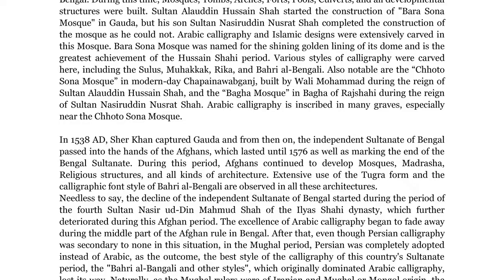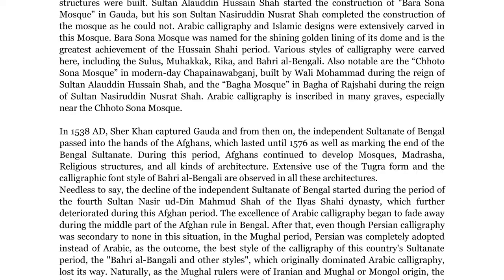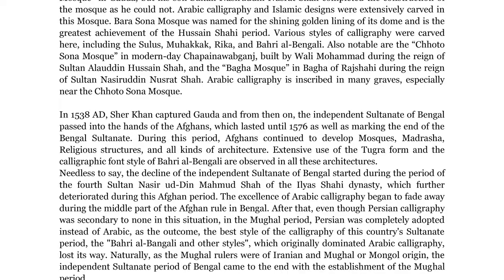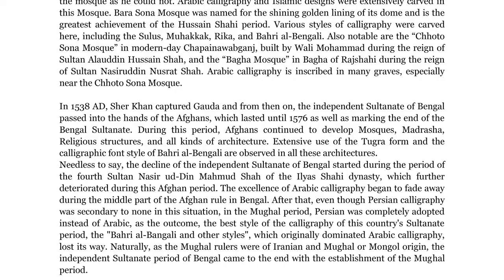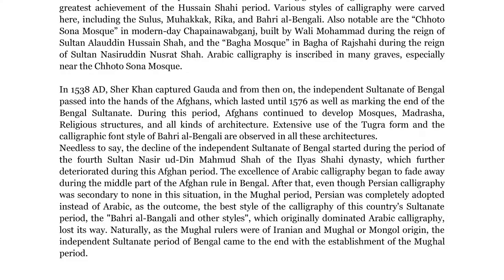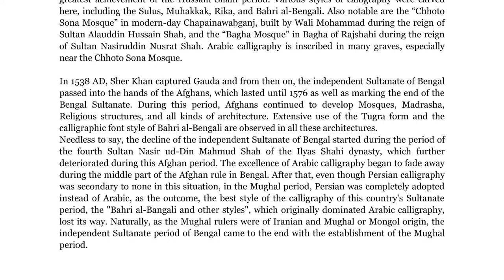The excellence of Arabic calligraphy began to fade away during the middle part of the Afghan rule in Bengal. Even though Persian calligraphy was secondary to none in this situation, the best style of the calligraphy of this country's sultanate period — the Bari al-Bengali and other styles which originally dominated Arabic calligraphy — lost its way. Naturally, as the Mughal rulers were of Iranian and Mughal or Mongol origin, the independent sultanate period of Bengal came to an end with the establishment of the Mughal period.